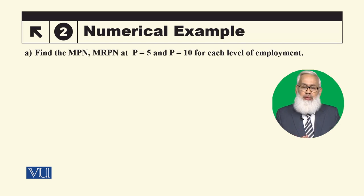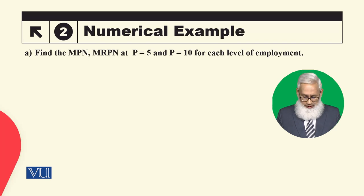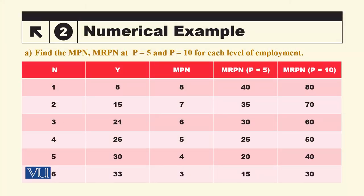So we will solve our example at two prices. First, we are assuming that the price of output is five dollars per unit. And second, we will see what happens if it increases and doubles to ten dollars. In this table, the first two columns are the same — first column is number of workers from one to six, second column is total output. In the third column we calculate the marginal product of labor.